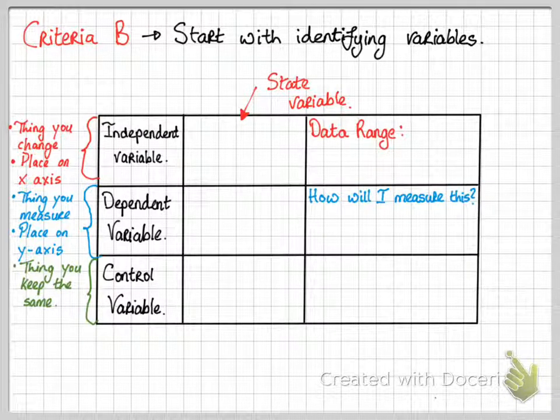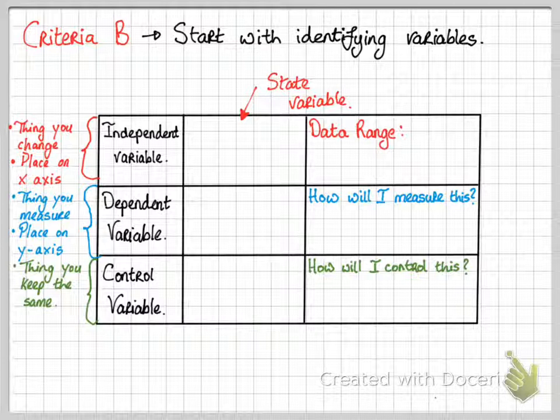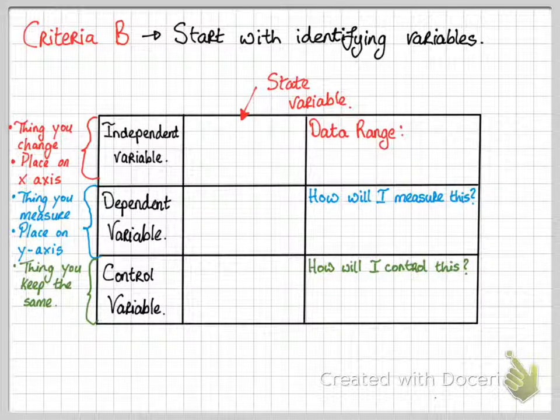Dependent variable is the thing you measure. So how will you measure this? And again, the control variable is the thing you control. So how will you make sure that everything remains constant?